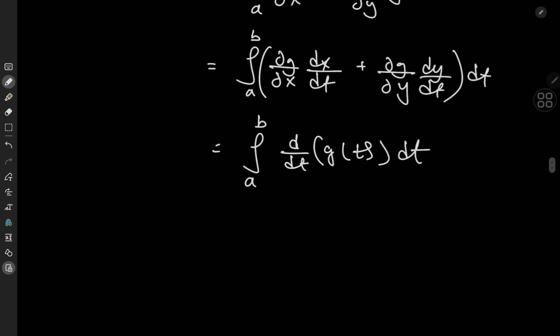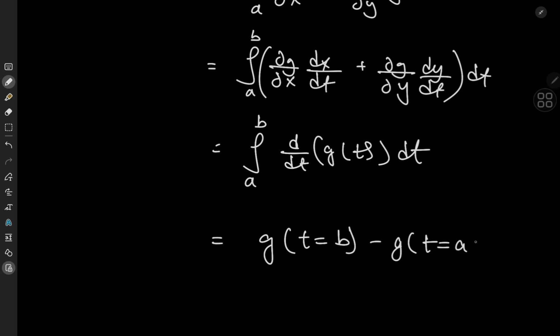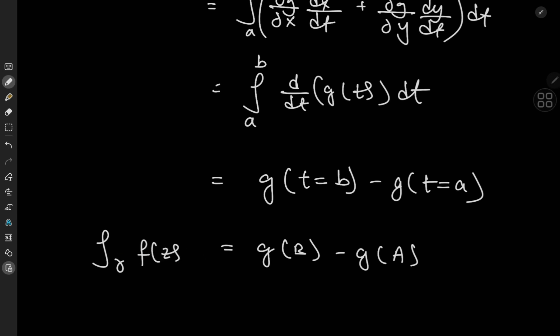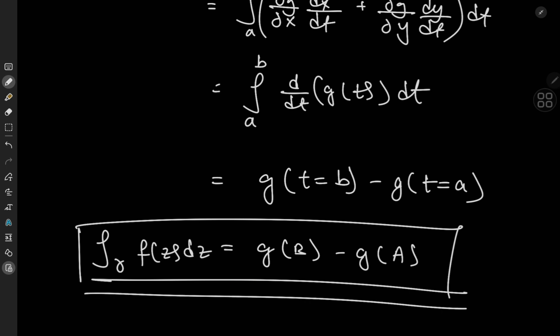And we know exactly what this evaluates to: the function g evaluated at t = b minus g at t = a, which is of course g(b) minus g(a). So we see that the existence of an antiderivative implies independence of path, and the result holds for any contour connecting the points a and b in the domain d.